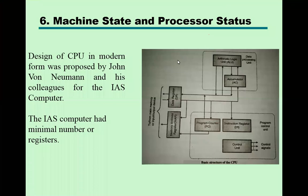Yesterday we discussed the design of the CPU as proposed by John von Neumann. The previous diagram we examined is also a von Neumann machine diagram, designed by him and his colleagues for the IAS computer. The IAS computer was developed with a minimal number of registers along with essential circuits, making it easy to understand the computer architecture and how different components are connected and working.